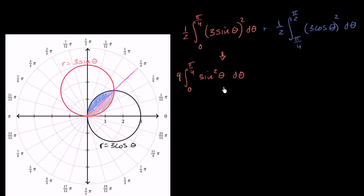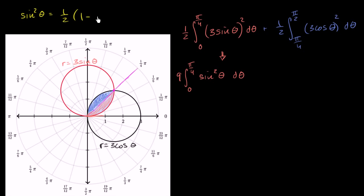You could evaluate this by hand or in the calculator, but let's evaluate this analytically. Sine squared theta is the same thing as one half times one minus cosine of two theta — that's a trigonometric identity we've seen a lot in trigonometry class.